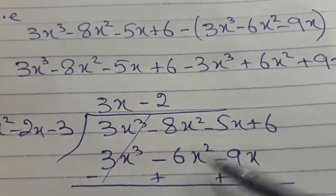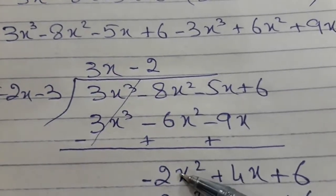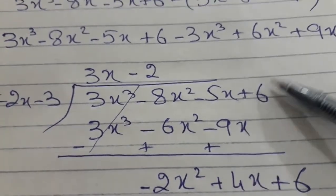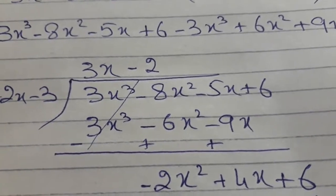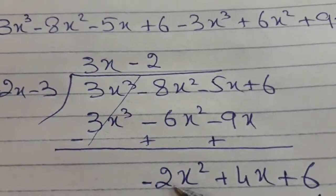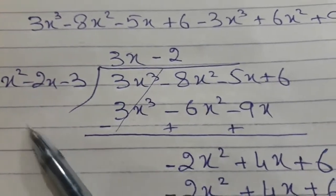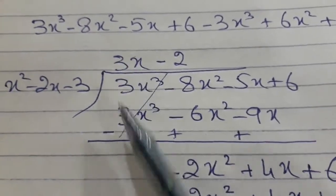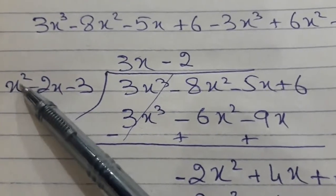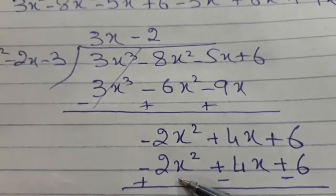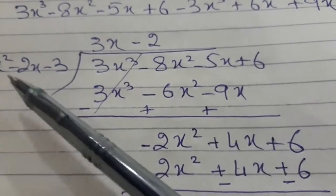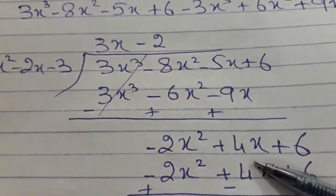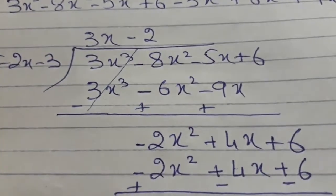After subtraction we get minus 2x squared. Then minus 5x plus 9x gives plus 4x, and we bring down the 6. Now I try to cancel out minus 2x squared. x squared multiplied by minus 2 gives minus 2x squared. With the other two terms: minus 2x times minus 2 gives plus 4x, and minus 3 times minus 2 gives plus 6.